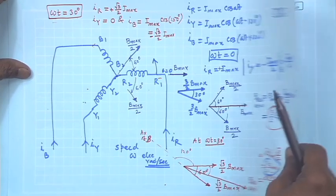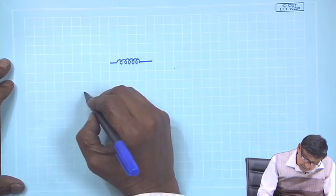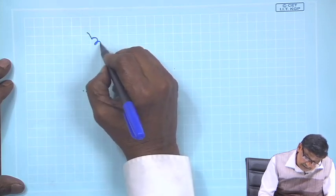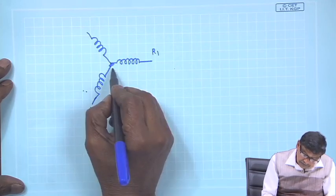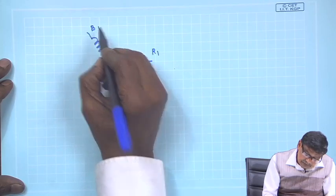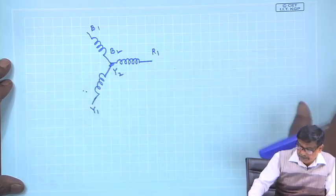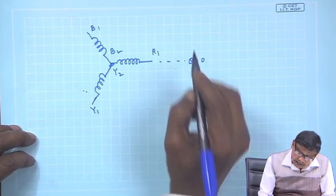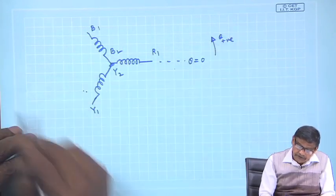Yes, it is true, and another nice way of showing that is this. Go to the same diagram: this is your R phase, this is Y phase, and this is B phase. So this is R1, this is Y1, Y2, and this is B1, B2. When current enters through one terminal, the field is away from the center — that is the direction of the field we have chosen. This is my reference: theta equal to 0, and theta measured positive in this direction.